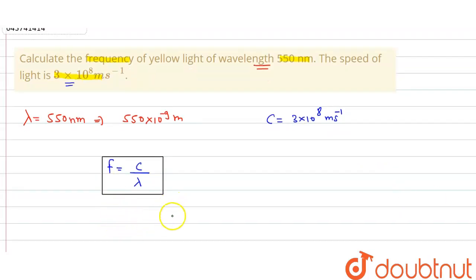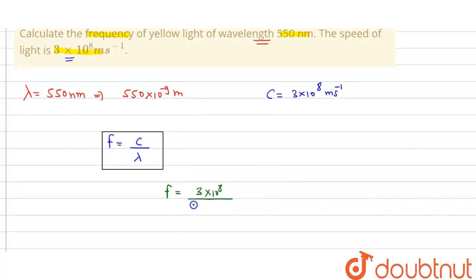We will get frequency f is equal to c value is 3×10^8 meter per second upon and the value of lambda is 550×10^-9 meter. So we will get frequency...